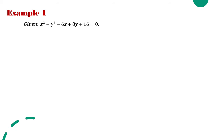For example number 1, the given is x² + y² - 6x + 8y + 16 = 0. From the given, we can say that the conic section is a circle because the coefficient of x² is equal to the coefficient of y².